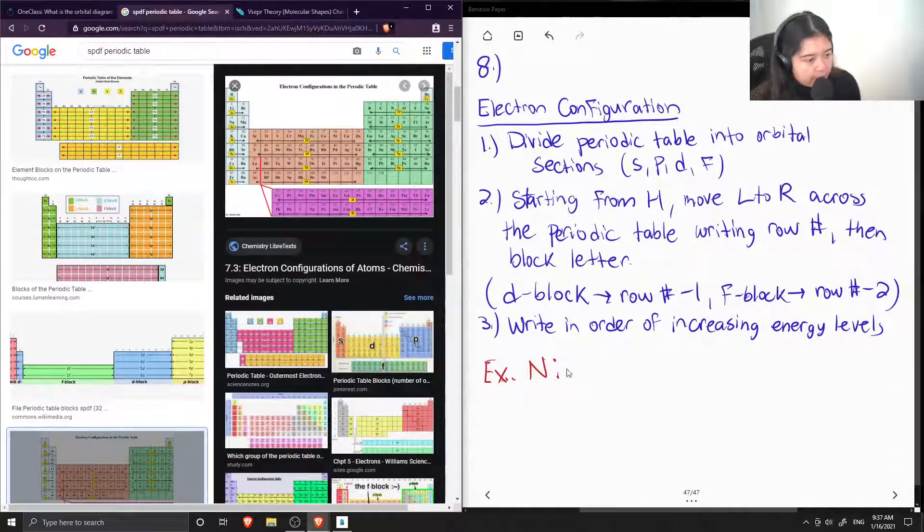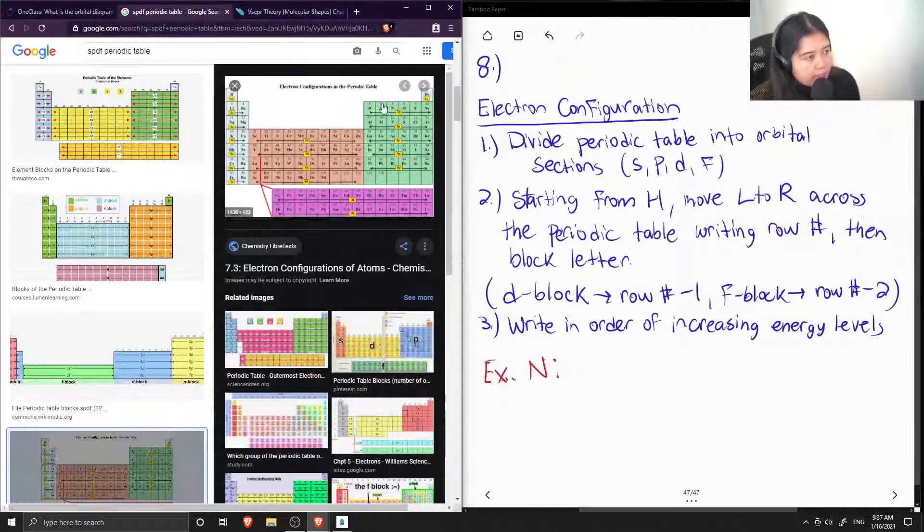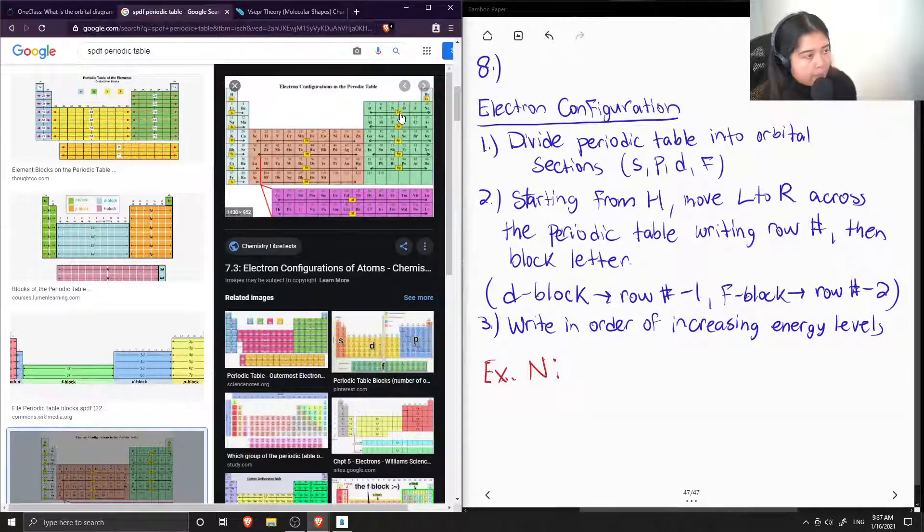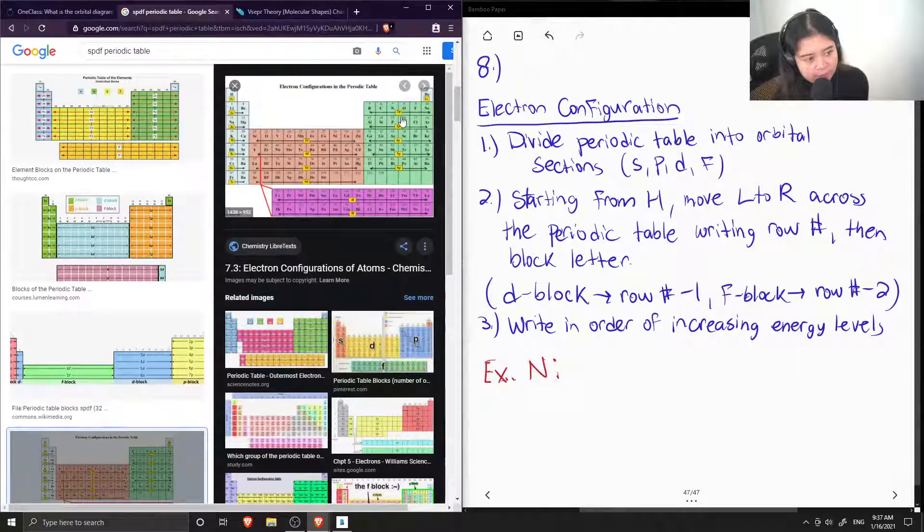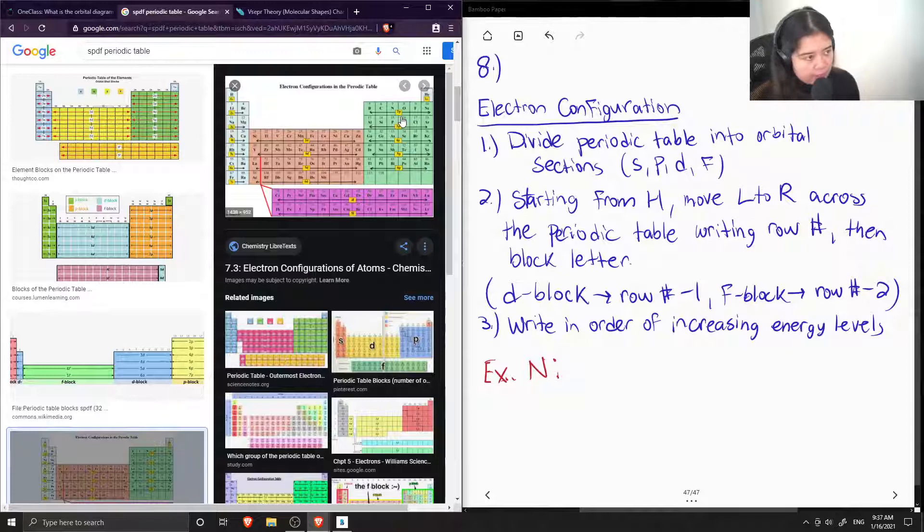So first, let's find nitrogen on the periodic table. It is found here at atomic number 7. So this means that there are 7 protons in an atom of nitrogen. And also when the atom is neutral, this means that no electrons have been added or removed. So we also have 7 electrons. So this is ground state nitrogen.